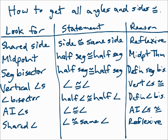If the triangles share a side, make that side congruent to itself with the reflexive property. If there's a midpoint, make the half segment congruent to the other half segment with the midpoint theorem. If there's a segment bisector, make the half segment congruent to the other half segment — that's the definition of a segment bisector. If you have vertical angles, make the angles congruent because vertical angles are congruent. If you have an angle bisector, make the half angle congruent to the other half angle by the definition of an angle bisector. If you have parallel lines, alternate interior angles are congruent. And if the triangles share an angle, make that angle congruent to itself by the reflexive property.